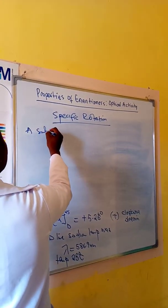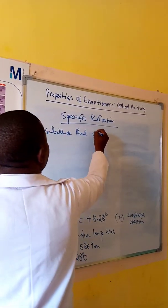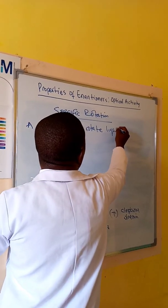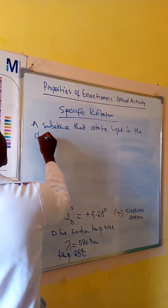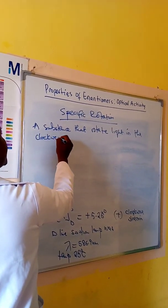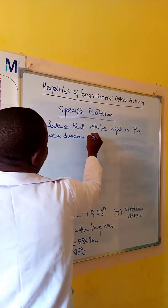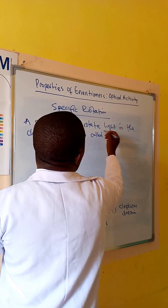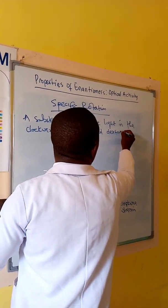A substance that rotates light in the clockwise direction is called or is said to be dextral rotatory.